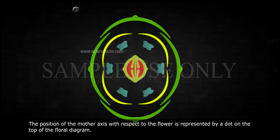The position of the mother axis with respect to the flower is represented by a dot on the top of the floral diagram.